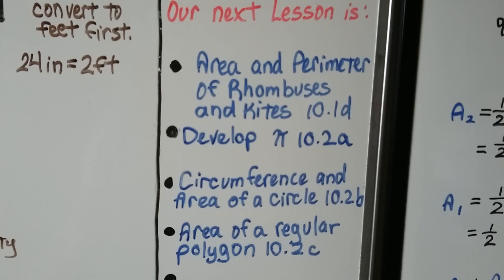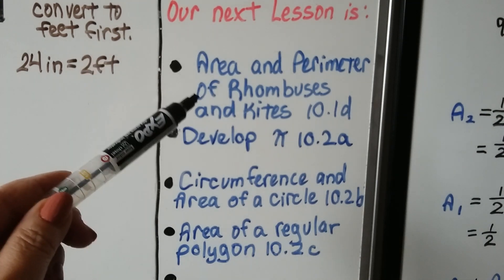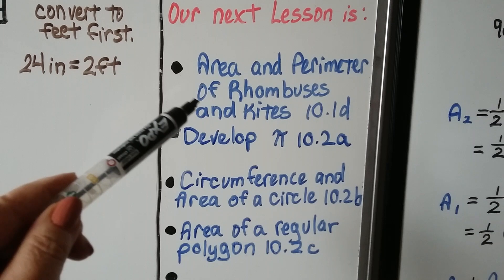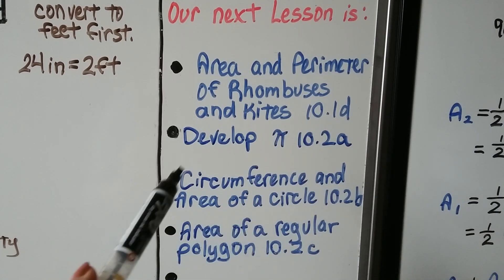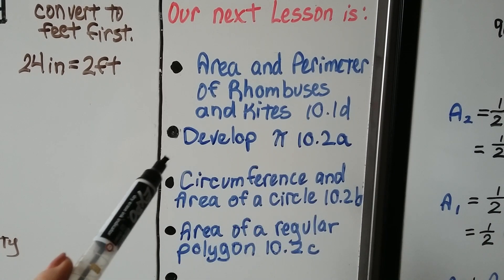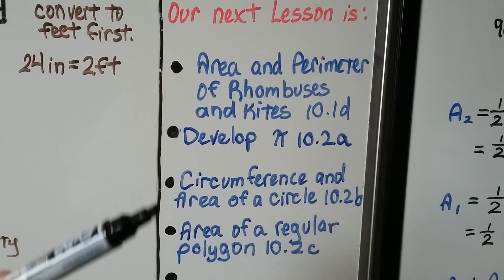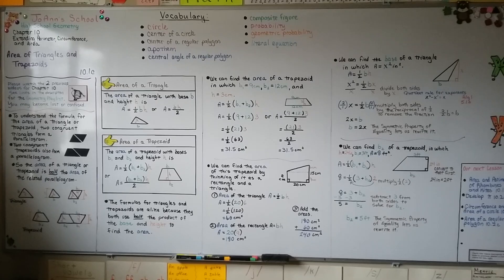So our next lesson is going to be about area and perimeter of rhombuses and kites. That's 10.1d. That's the final part of 10.1. So it was split into four parts the entire lesson. Then we're going to talk about developing pi in 10.2a and circumference and area of a circle and then the area of a regular polygon for 10.2. I hope you were able to take good notes and I hope you now understand about the area of triangles and trapezoids. And I hope you have a great day. I'll see you next time.